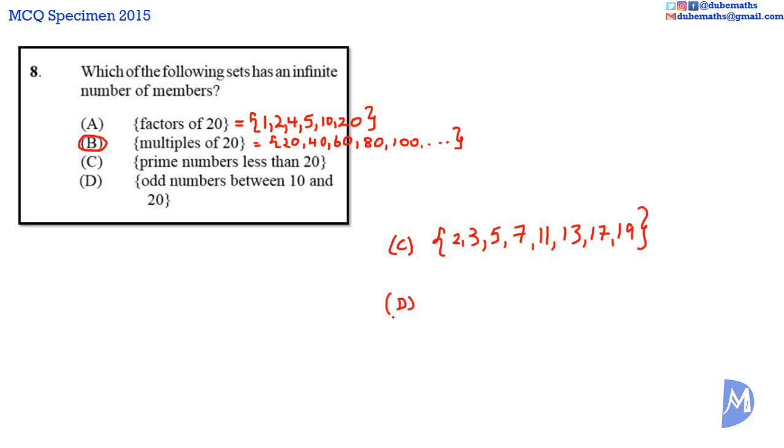The set of odd numbers between 10 and 20 is the set of 11, 13, 15, 17, 19. Again, the answer to question 8 is B.